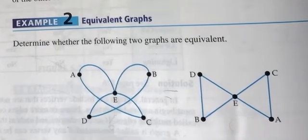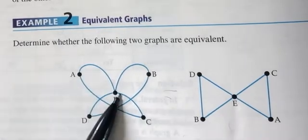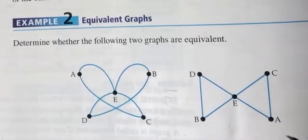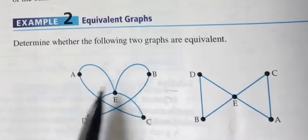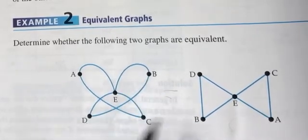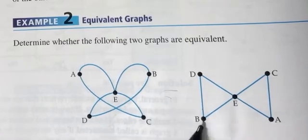Now I'm going to double check for my connections. A is connected to E and C. A is connected to E and C. B is connected to E and D. B is connected to E and D.